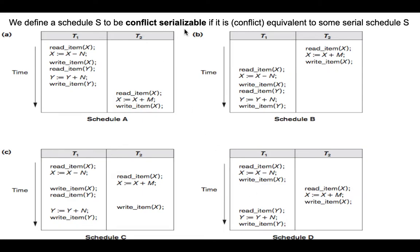The next term is conflict serializable. We define a schedule S to be conflict serializable if it is conflict equivalent to some serial schedule. So schedule D can be called conflict serializable if it is conflict equivalent to some serial schedule, say schedule A. Conflict equivalent means if there are conflicting operations, they occur in the same order in both schedules.